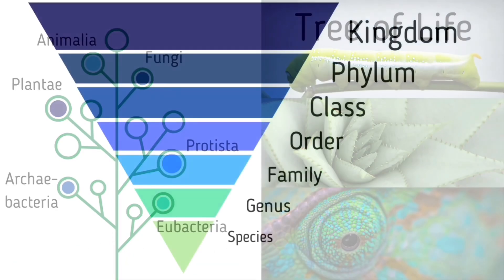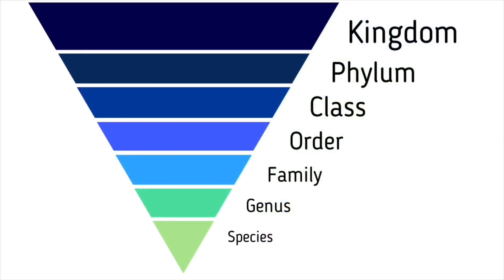Think of classification as an inverted pyramid with seven categories. Kingdom is the largest and most broad category. You may have heard of the animal kingdom — that's a great example and includes every single animal on earth. Moving down the pyramid, the categories start to become more specific, eventually ending at the species level.